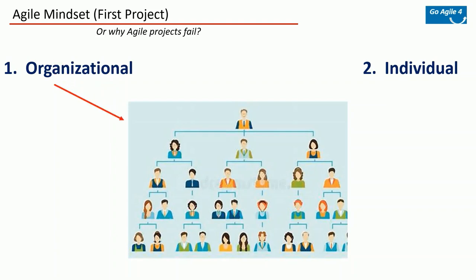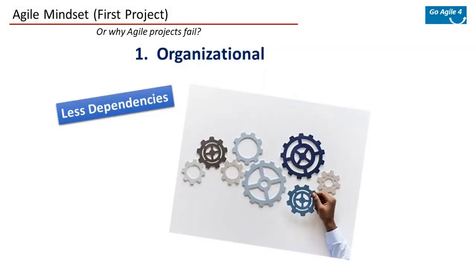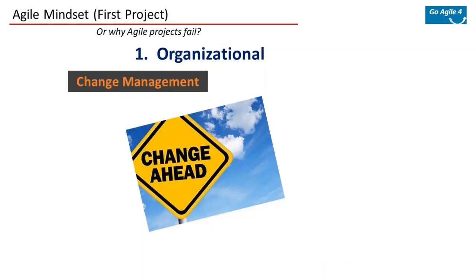From an organizational perspective, if you have any influence you should make some of these points to choose the right kind of project so you don't fail. First: dependencies. When you choose a project as your first project to try out agile, make sure it has the least number of dependencies. A project with fewer dependencies is fairly easy to execute. You choose that to try out agile because you don't want your first project to fail — perceptions are important, so you want to show a win.